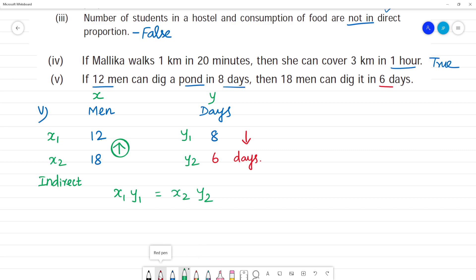We don't know this, so we can find it. Now x1 is 12, multiplied by y1 is 8, is equal to x2 is 18, y2 we don't know. We're going to find if it's 6 days or not. So 12 multiplied by 18 divided by 8 multiplied by 18.